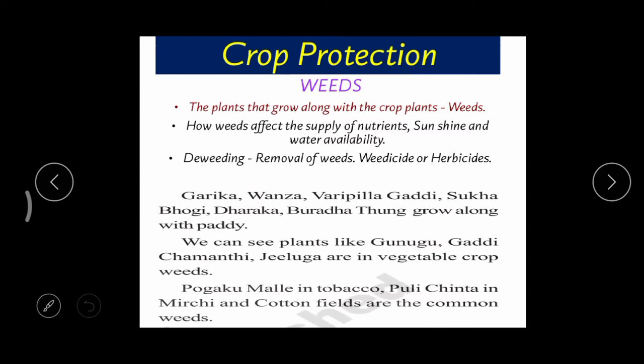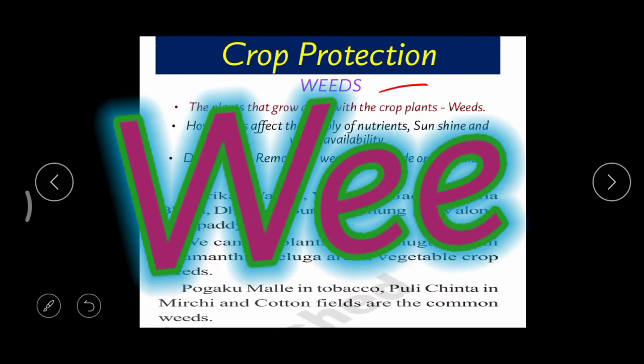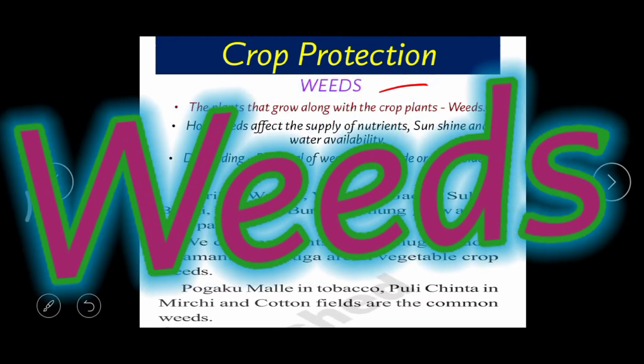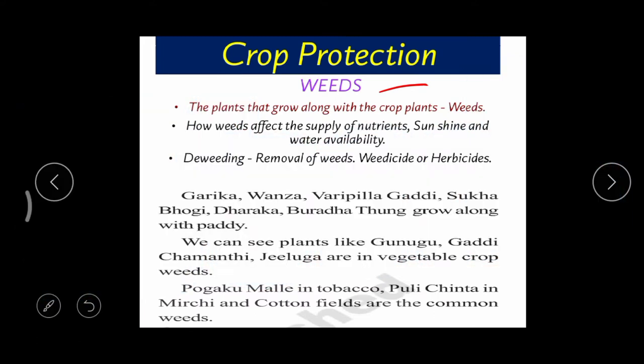The next topic is crop protection. Just like human beings, plants are also affected by different types of enemies — weeds, insects, and pests. Weeds are unwanted plants. For example, when we grow rice, along with the rice we also find other plants we don't need. Such unwanted plants growing along with crop plants are called weeds.